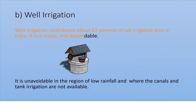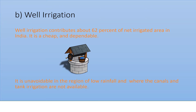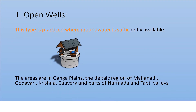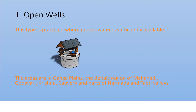The next type is well irrigation, which is cheap and dependable. Well irrigation is of two types: one is open wells and the other is tube wells. Open wells are prepared where groundwater is sufficiently available. There are many areas where open wells are used.